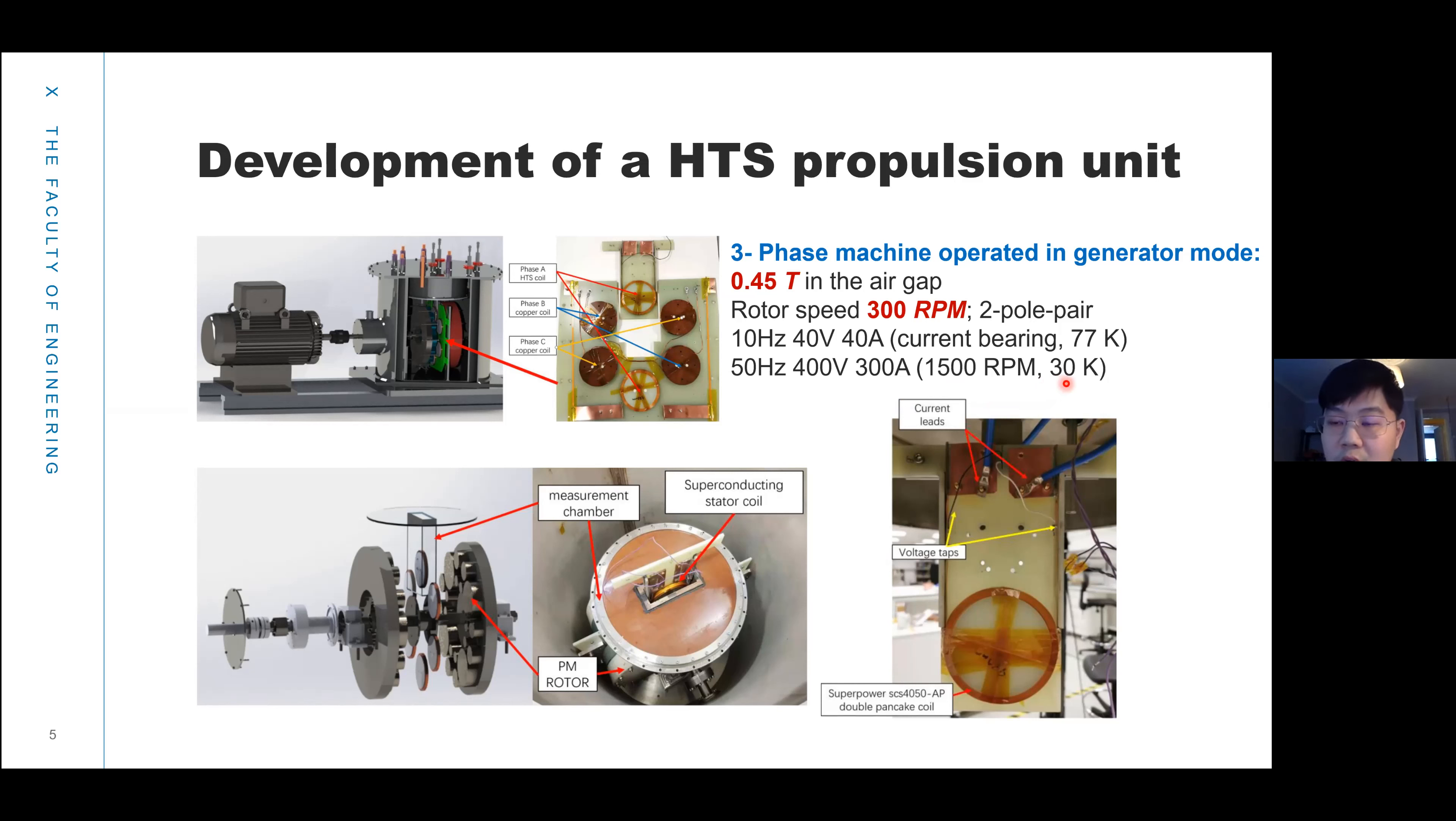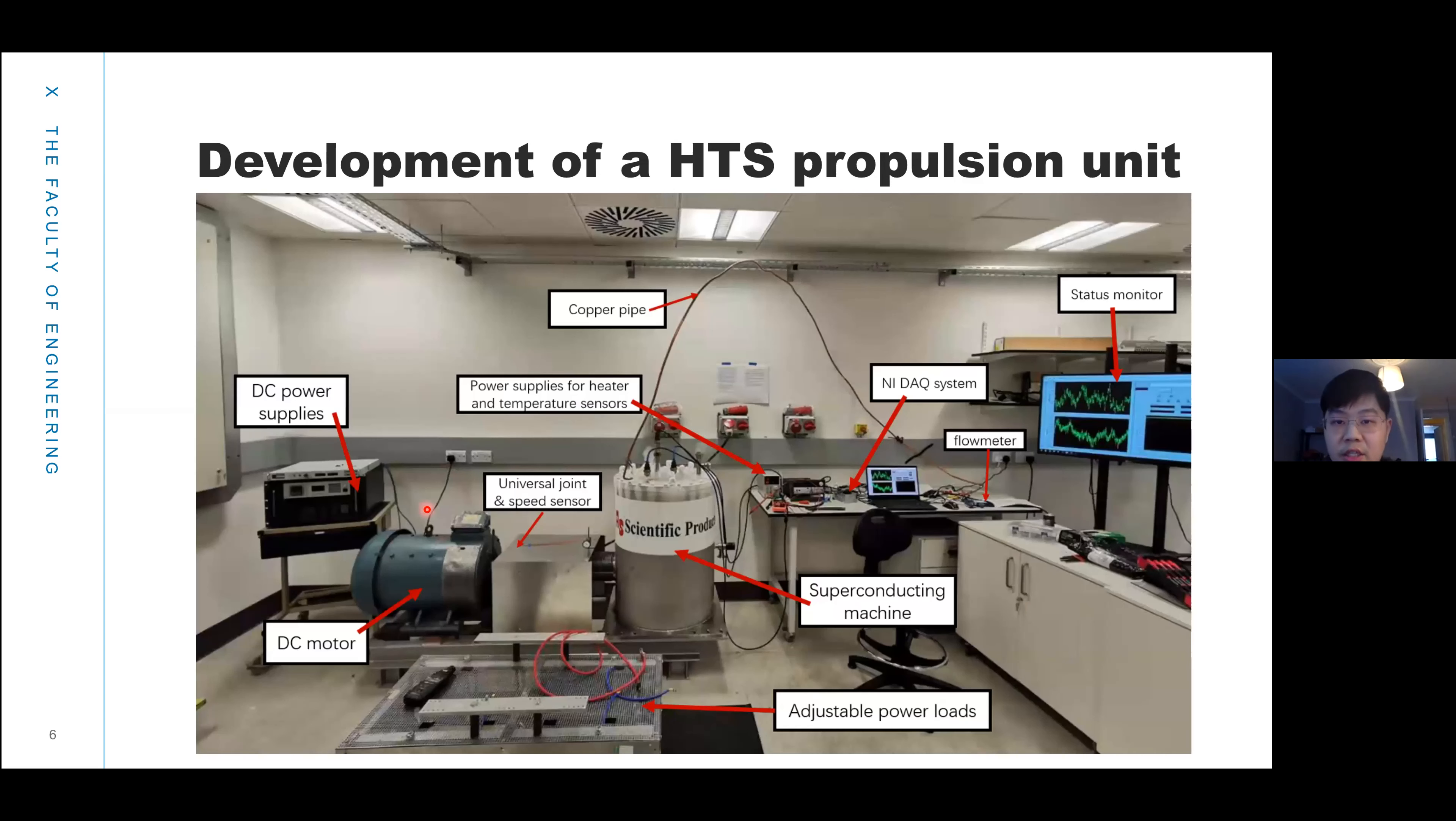The temperature can go down to 30 Kelvin. This is a measurement coil in superconducting phase A, and it was put into a measurement chamber. The measurement chamber has liquid nitrogen inside. Here is a copper pipe connected to a flow meter. If the HTS coil produces heat inside the measurement chamber, then the liquid nitrogen boils off and we can measure the flow rate of the nitrogen gas, and then we can calculate the total heat inside the machine.